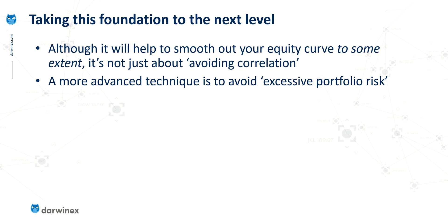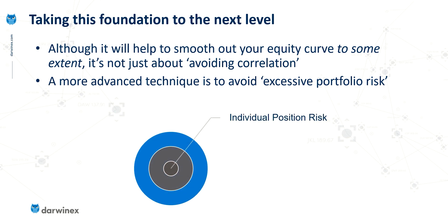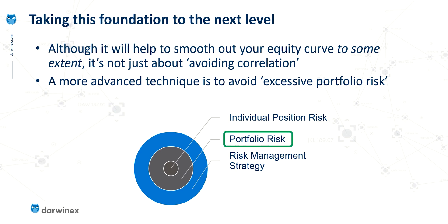I also provided links to previous videos on measuring correlation, because it's absolutely essential to inform your decisions. We need to measure correlation so that we can avoid over-correlation within your portfolio. This series now builds on that foundation, but we'll provide a lot more information, because in order to reduce risk most effectively, it's not just about avoiding correlation. We're now going to look at the more advanced technique of avoiding excessive portfolio risk. There are multiple levels of managing risk — at the very fundamental level we manage individual position risk, but what we're talking about here is portfolio risk, and these two combined will be the major components of your risk management strategy.